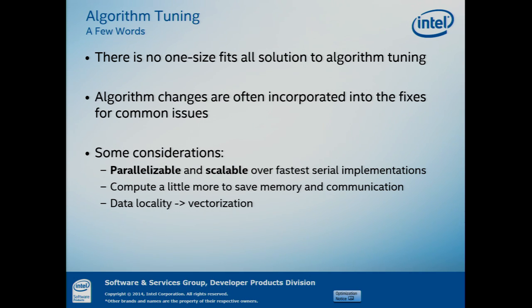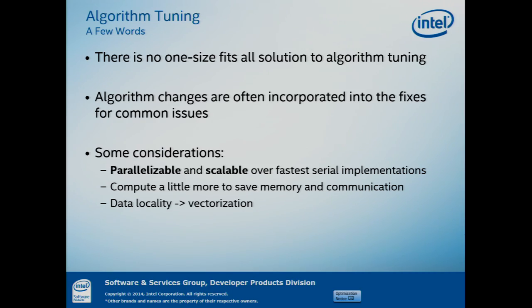A couple of key considerations — when you're implementing something and want it to run on these huge machines, always consider parallelizable and scalable approaches over fast serial implementations. If you have the fastest serial implementation, that's great, but if it cannot be parallelized, when you run it on a machine with even two or four cores, competitive parallelizable algorithms are going to outperform your fastest serial algorithm. So think: is this parallelizable? Where am I going to run into issues? How am I going to divide up my data? Don't optimize purely for serial execution, because the way computing is going today, that's pretty much obsolete.